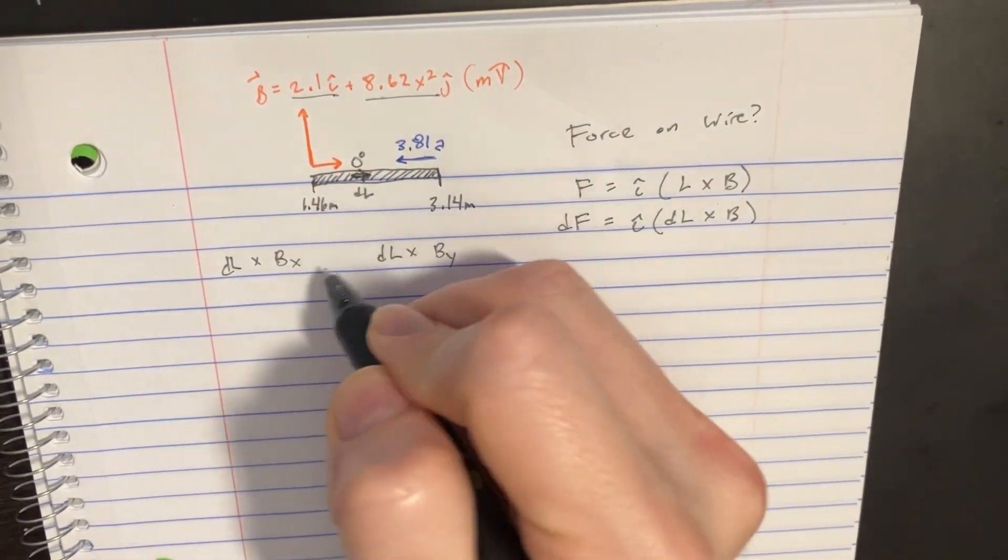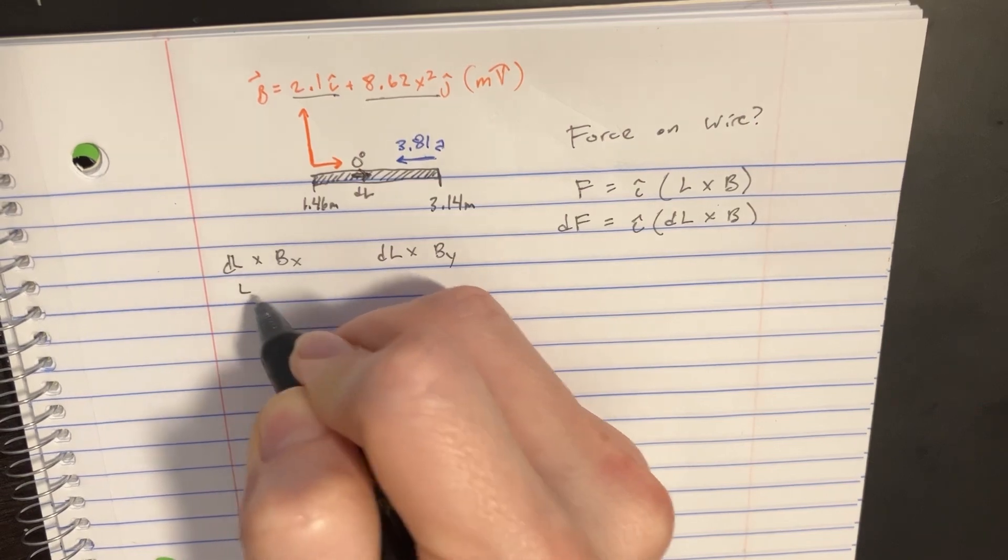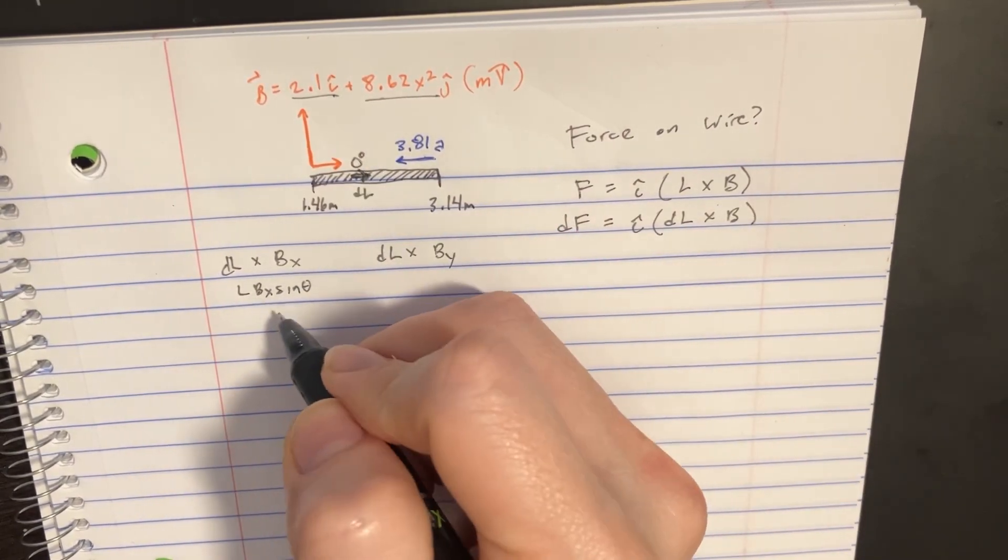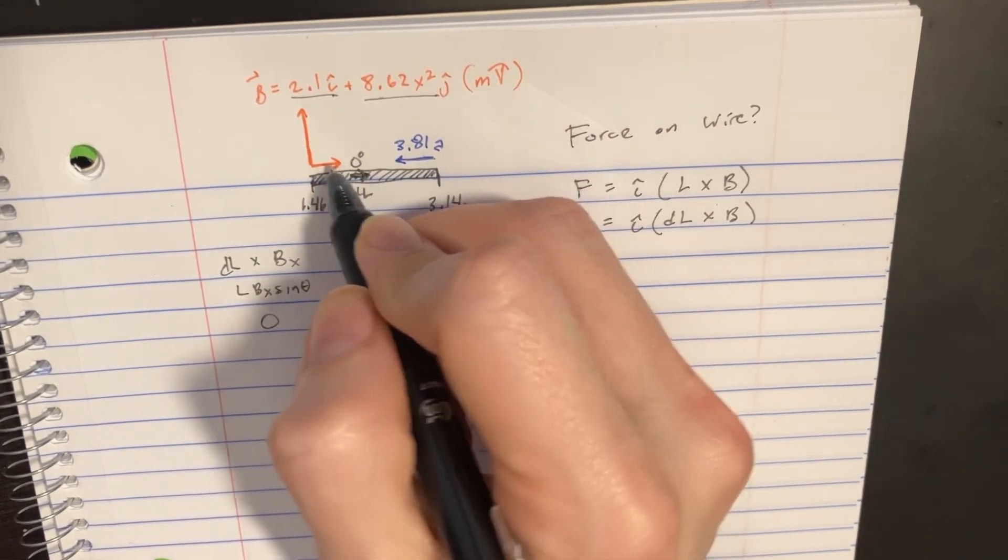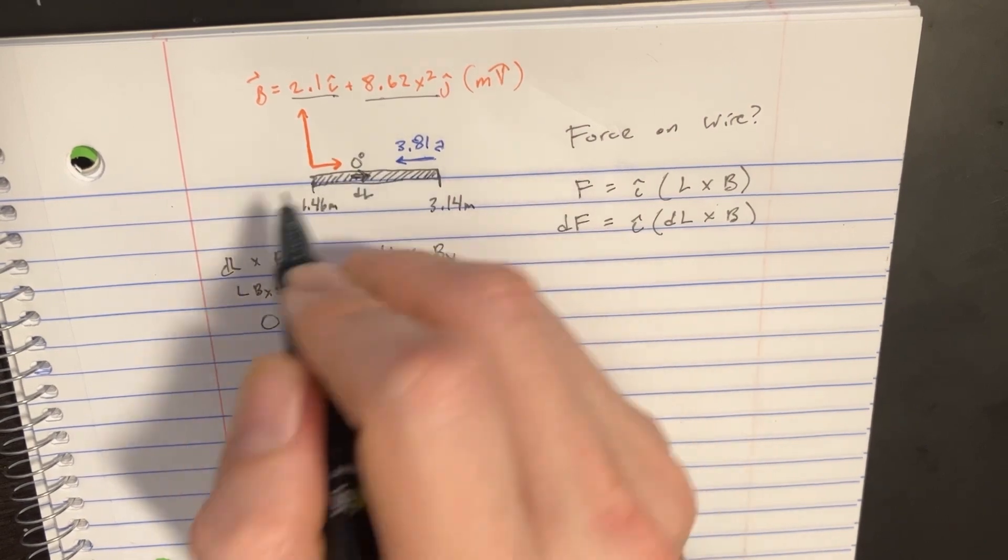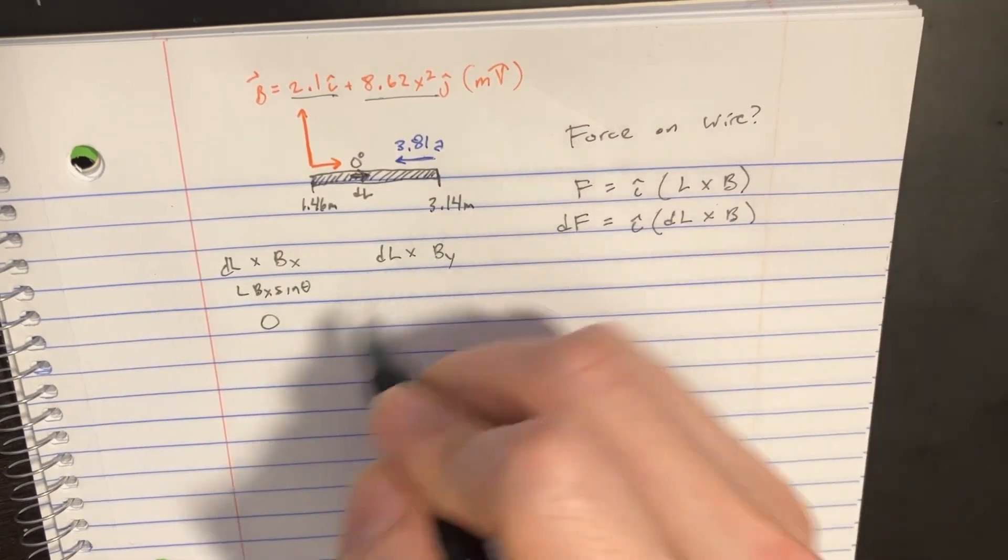Because it's L·B_x·sin(θ) and sin(0) = 0, we get zero. So the whole x component of this magnetic field is just going to be zero. We don't even have to worry about that.